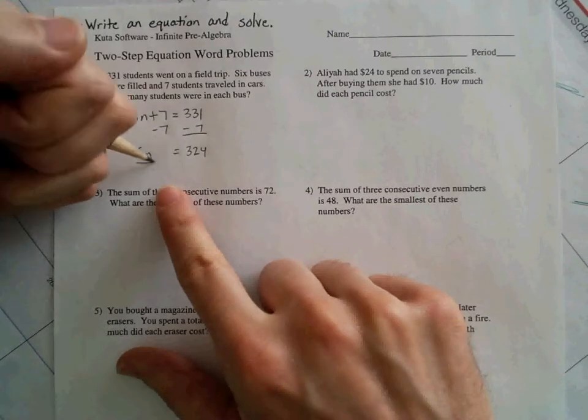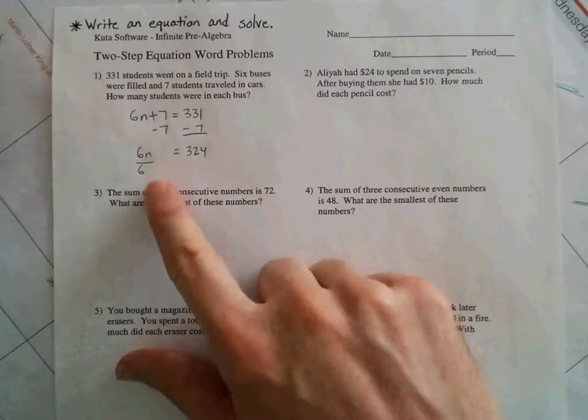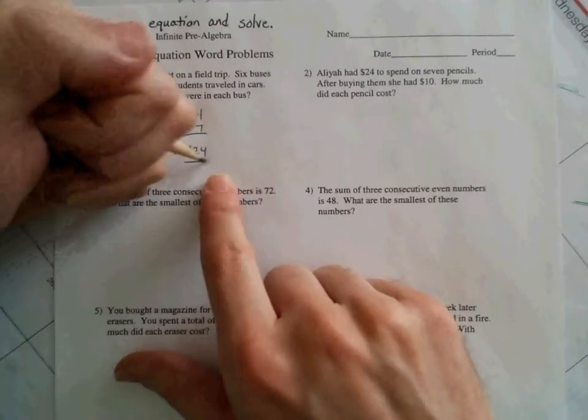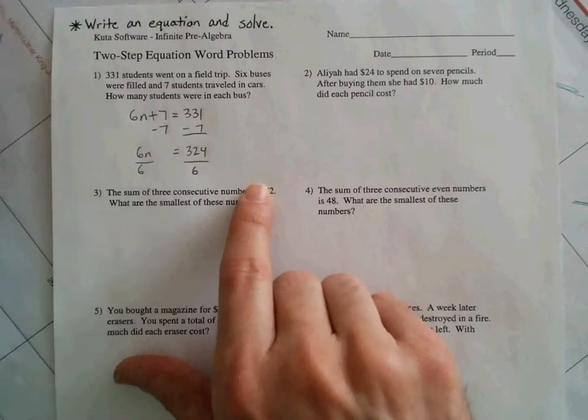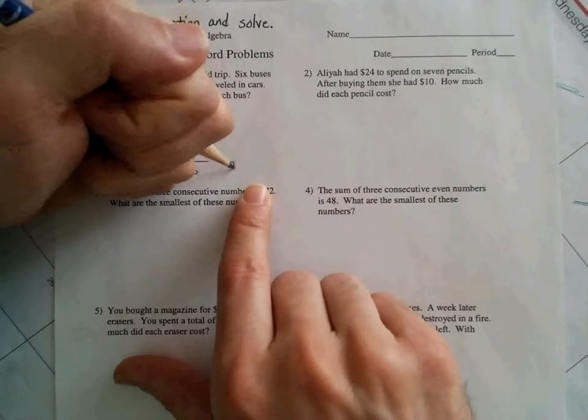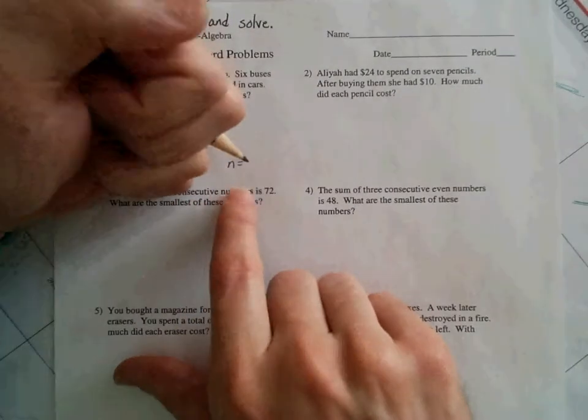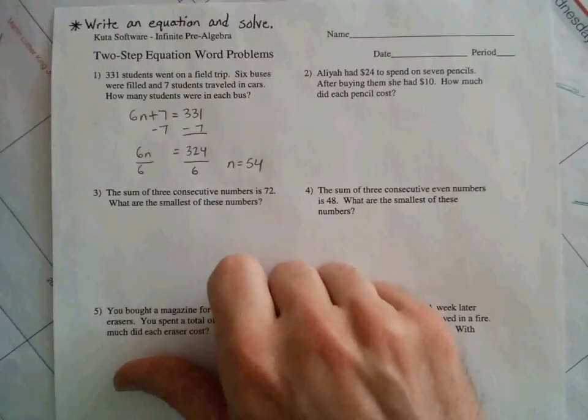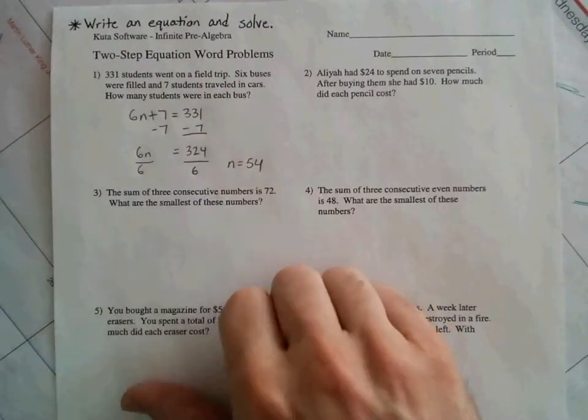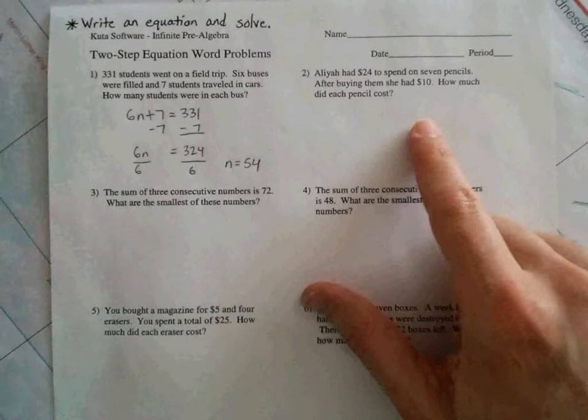That equals 324. And now to finish this off, you will divide both sides by 6. It's the opposite of multiplying by 6. So you see the final answer here is going to be... this cancels over here, equals 54 when you divide 324 by 6. So, final answer, n=54.